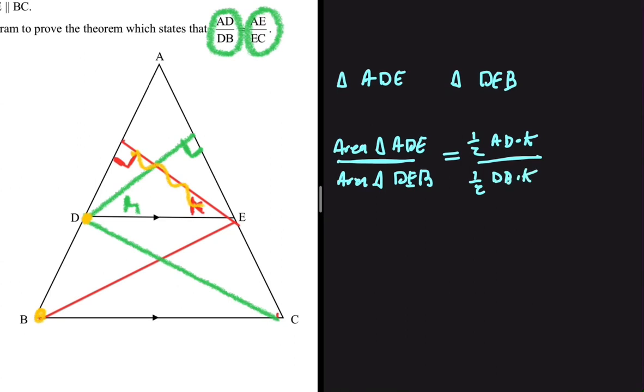As you can see, a half and a half cancels out, K and K cancels out. So now we have AD divided by DB.